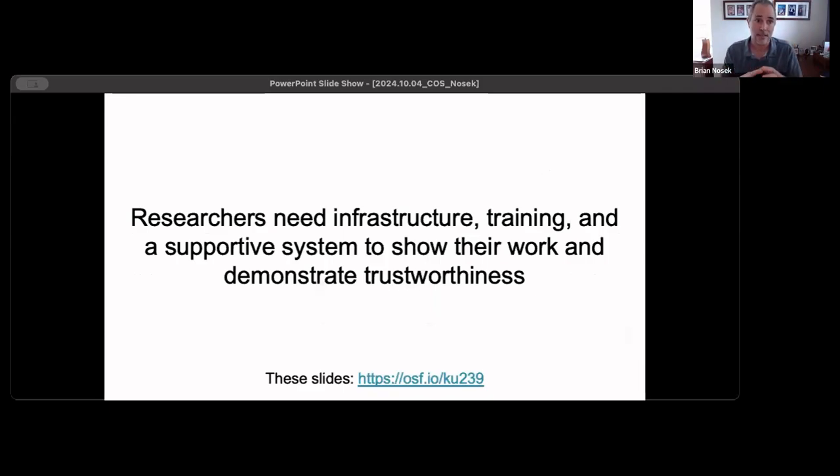What researchers really need in this climate to be able to show the trustworthiness of their work is base infrastructure like the OSF or otherwise that makes it possible and easier for them to manage their research workflow and to make that more accessible. They need training because the skills of open research are skills. They're not just, oh, you just post this online. Making your data more usable by others, especially anticipating that at the outset of your work that you know you're going to share it later, requires understanding, managing how to think about FAIR and CARE principles for managing that research, making it available. That takes some time to learn how to do it well. And of course, they need a supportive system of rewards, of incentives, of policies that are aligned with their goals to do the most trustworthy research that they can so that ultimately they can show their work.